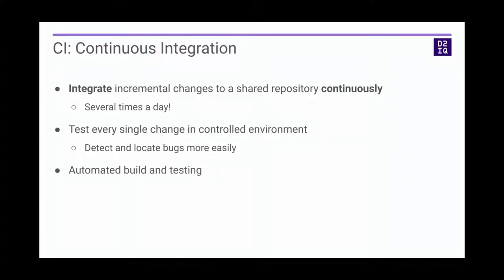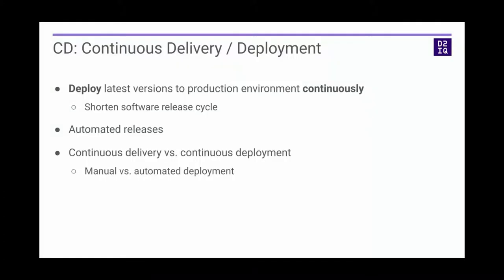The continuous integration portion allows a developer to integrate incremental changes to a shared repository continuously. Every commit and merge that this developer makes in the developer repository will initiate tests, which, if successful, may generate a pull request for operational review. The continuous delivery side allows operations — or in a larger organization where developers and operations are separate roles — this supports both of those workflows.